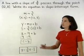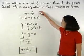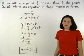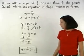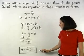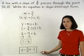So the equation of a line with a slope of three-fourths that passes through the point twelve-eight is y equals three-fourths x minus one.